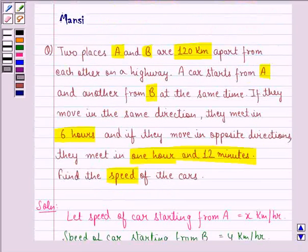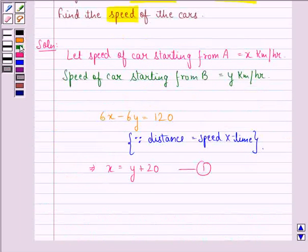Now it is also given that if they move in opposite directions, they meet in 1 hour and 12 minutes. First of all we see that 1 hour and 12 minutes is equal to 6 by 5 hours.